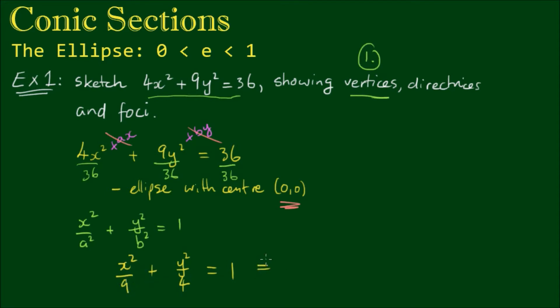So in standard form, we have x² on 3² plus y² on 2² equals 1, since 9 is the square of 3 and 4 is the square of 2. So therefore, we have a equals 3 and b equals 2. And remember that a is the length of the semi-major axis, and b is the length of the semi-minor axis.